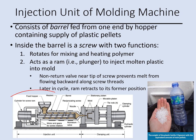In the injection unit, we have a barrel with a feed hopper that contains plastic pellets. Inside the barrel, there is a screw with two functions: it rotates to mix the material while a heater melts it, and it also works as a ram to inject the molten plastic into the mold on the clamping side of the machine.